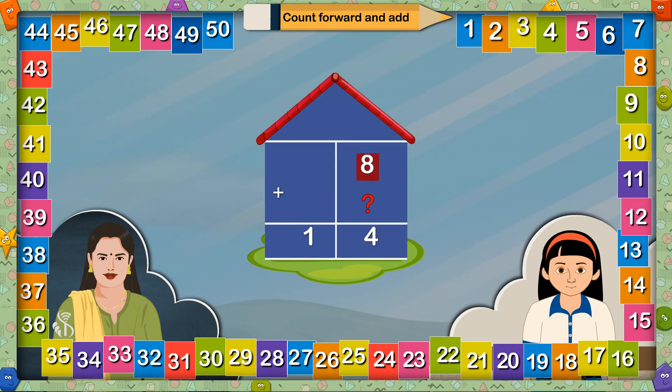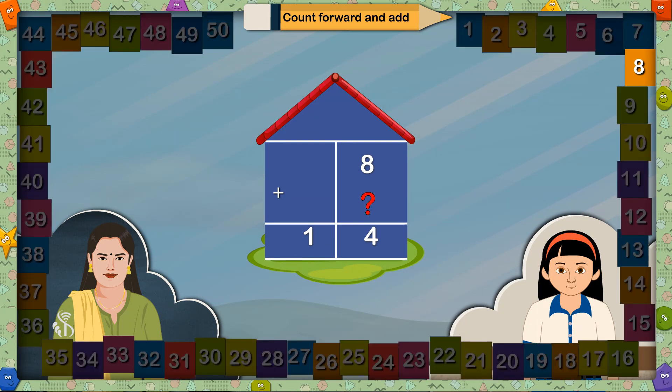For example, which number should be added to 8 so the answer will be 14? What is to be done? To find out that number, we will have to count forward from 8 up to 14, that is 9, 10, 11, 12, 13, 14. This means we have counted 6 places after 8. So if we add 8 and 6, it will make 14 together. So write 6 in this square. Have you followed? Yes, madam.